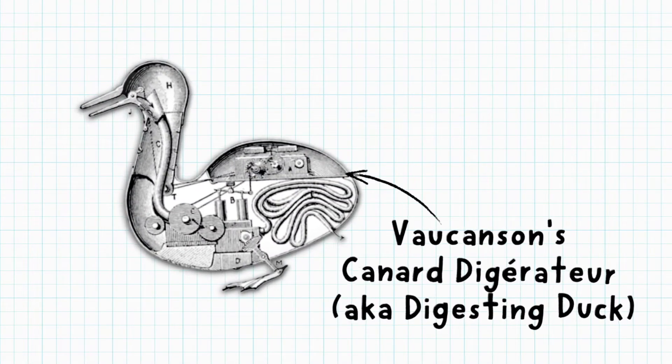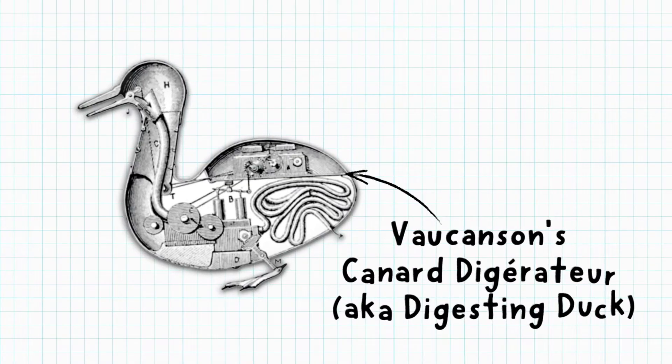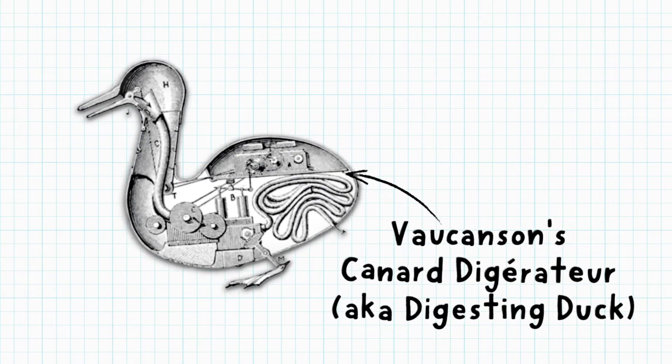Animal automatons were also used to wow crowds. In the 18th century, a French inventor built a life-size automaton duck. The curious copper creature could quack, swim, and even appear to poop, so it was named the digesting duck.